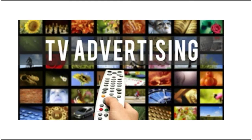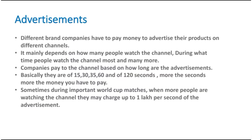How do TV channels earn money by advertising branded products? Different brand companies have to pay money to advertise their products on different channels. It mainly depends on how many people watch the channel and during what time people watch it the most. Companies pay the channel based on how long the advertisements are. Basically, advertisements are 15, 30, 60, or 120 seconds long. The more seconds, the more money they have to pay.